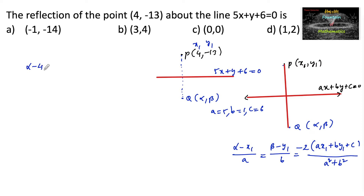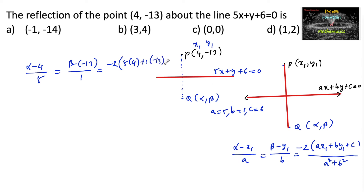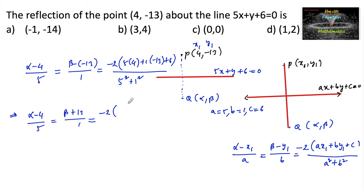We have the relation: (α - 4)/5 = (β + 13)/1 = -2 times (ax1 + by1 + c) / (a² + b²). Computing the numerator: 5×4 + 1×(-13) + 6 = 20 - 13 + 6 = 13. The denominator: 5² + 1² = 25 + 1 = 26. So the right-hand side is -2 × 13/26 = -1.